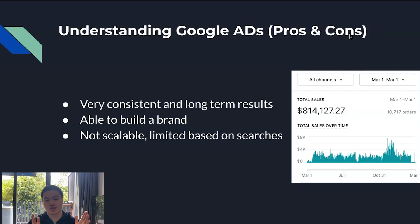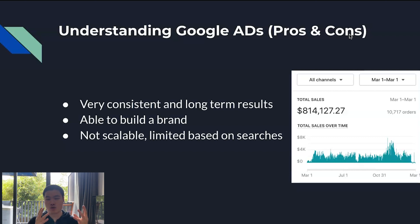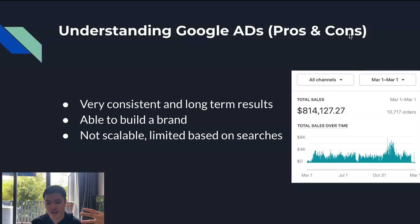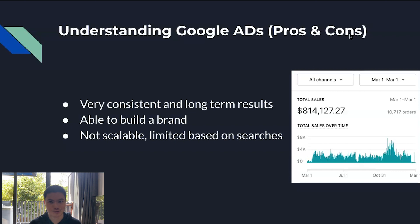Understanding Google Ads — there's no perfect platform in the world, and although Google Ads is amazing, there are some cons as well. The first thing I absolutely love about Google Ads is that it's extremely consistent. Once you find a winning product, you can have really long-term results. Look at this screenshot — this is from one of my stores selling just one main set of products. Running Google Ads, it generated over $814,000 US dollars within a year, averaging about $70K a month in sales. Results are consistent — about two to three thousand dollars a day year-round.